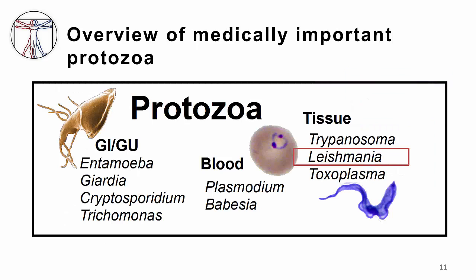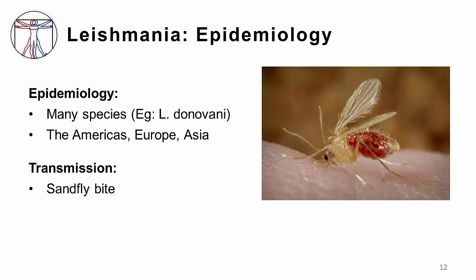We will next turn our attention to Leishmania. There are several species of Leishmania. Three common species are Leishmania donovani, which causes old-world Leishmaniasis and more visceral disease, versus Leishmania mexicana and Leishmania braziliensis, which cause mainly cutaneous and mucocutaneous disease and are primarily seen in the Americas. Transmission is via the bite of a sandfly.